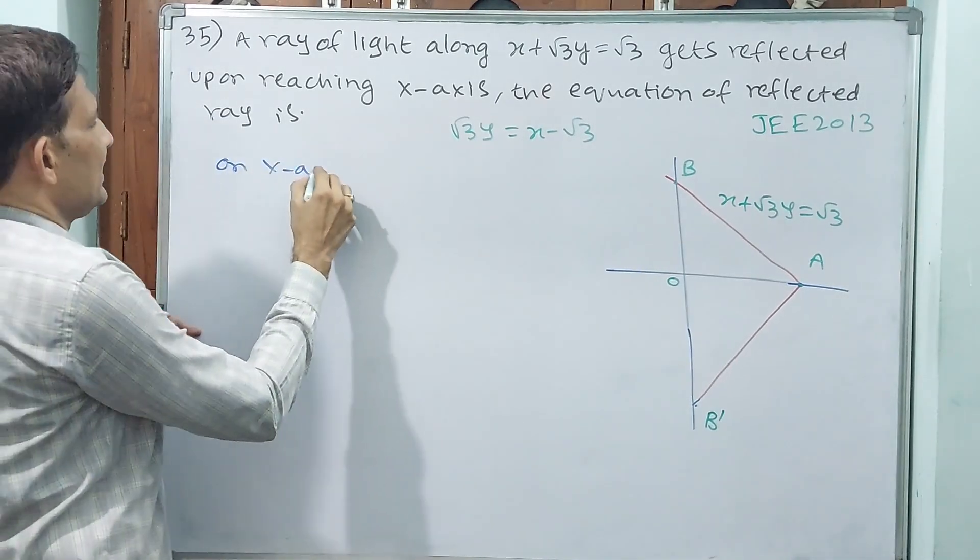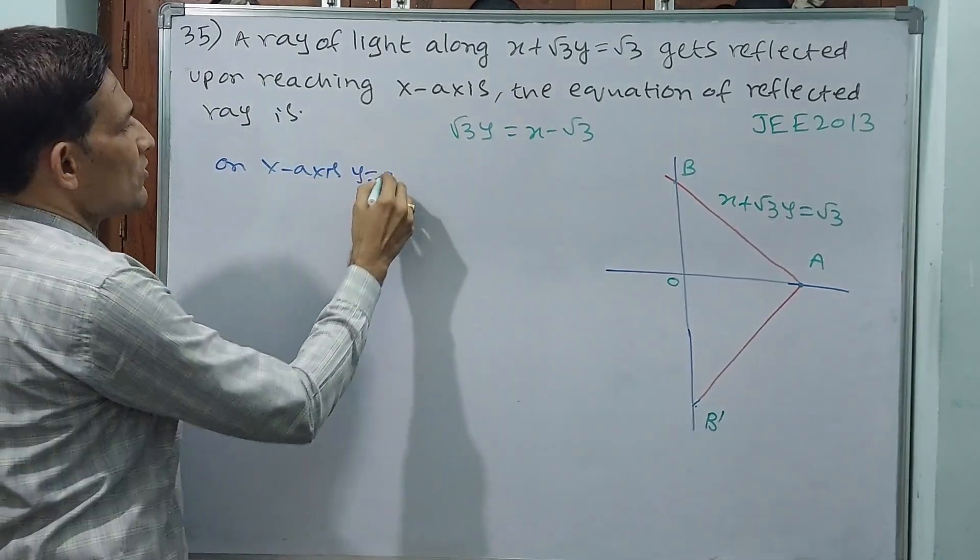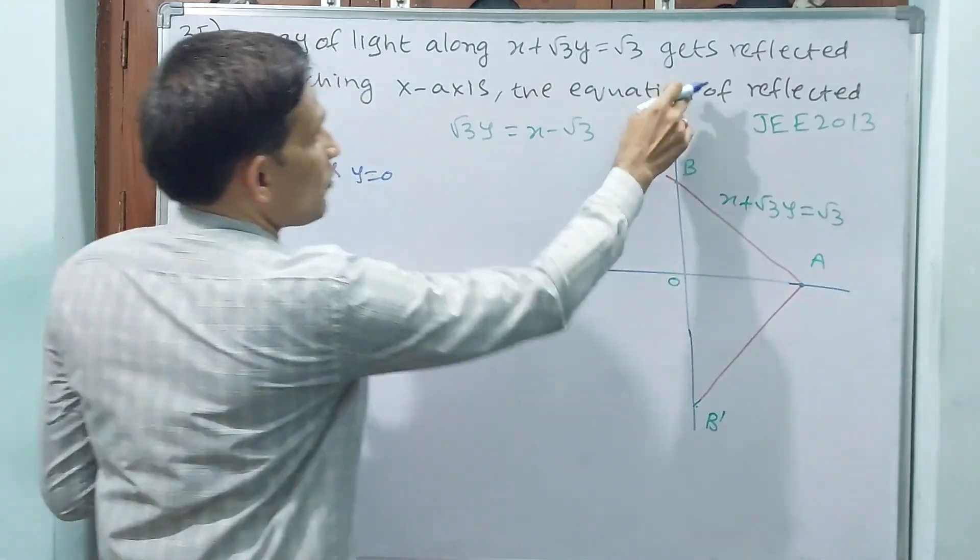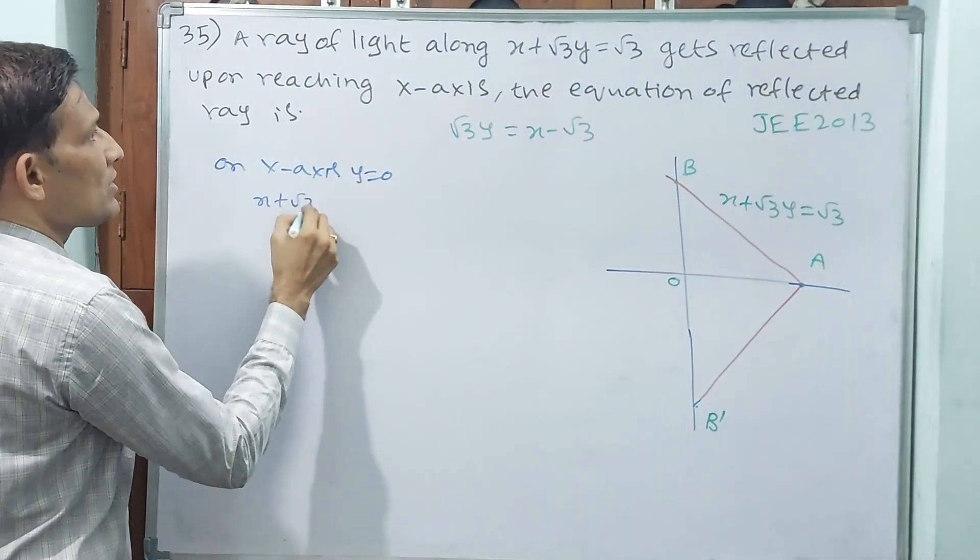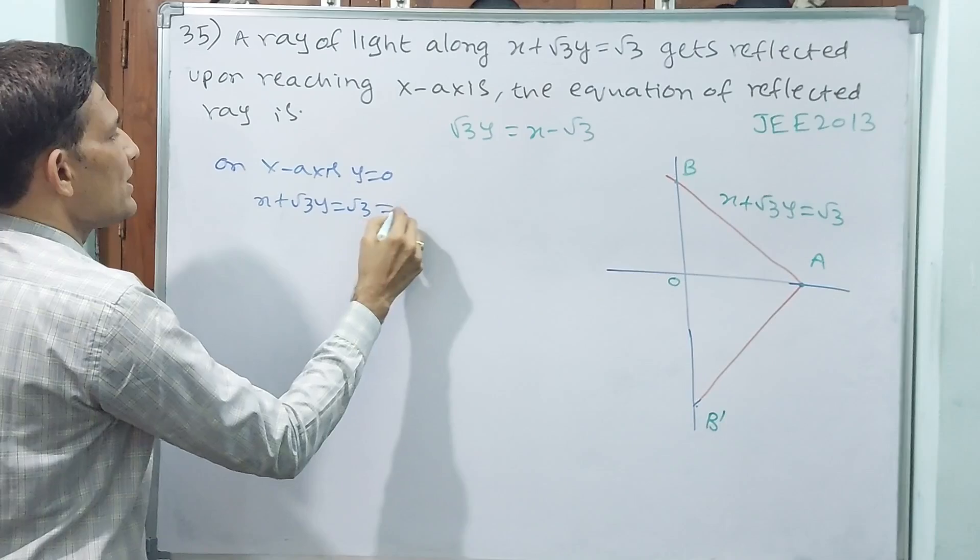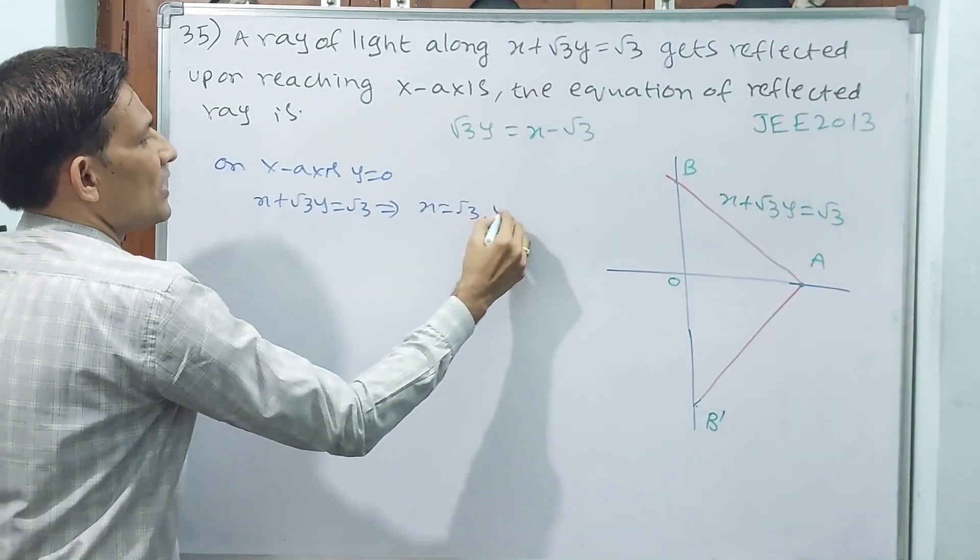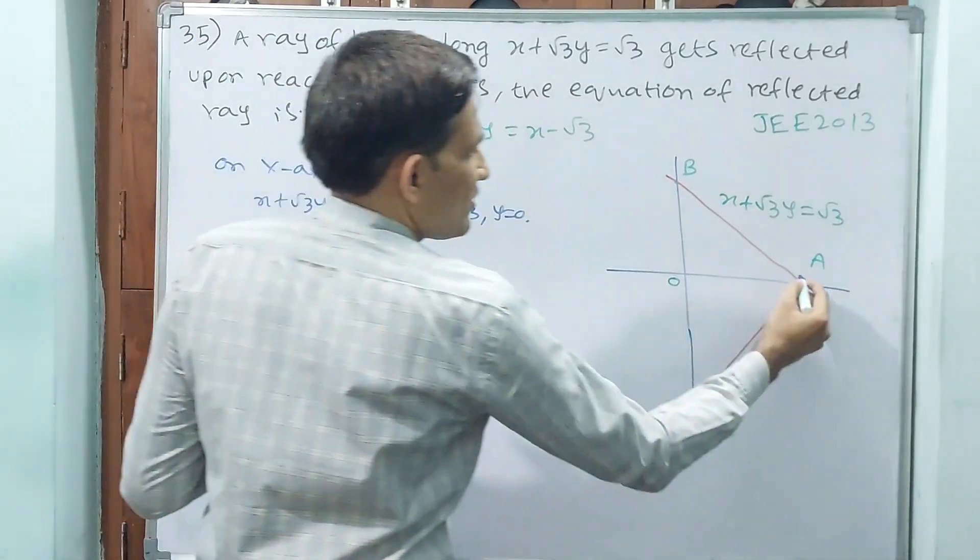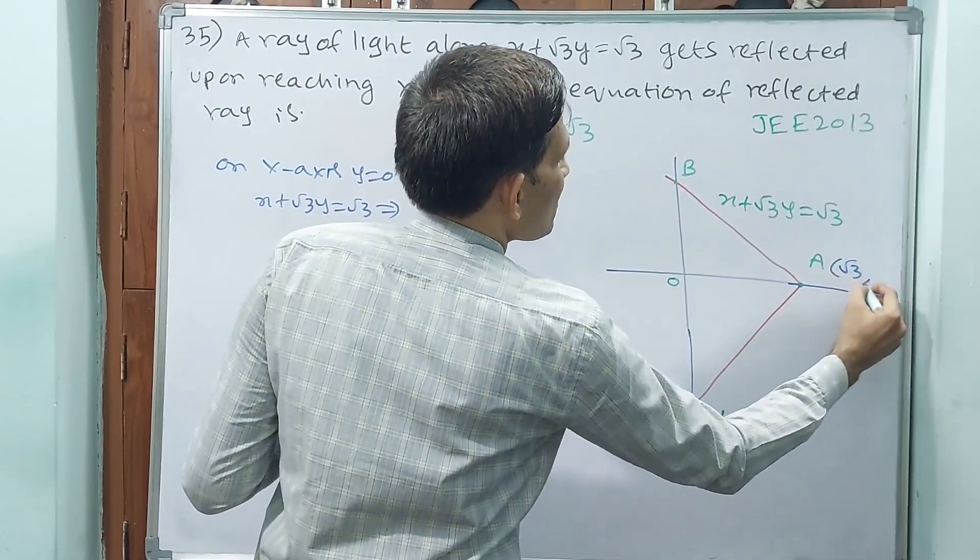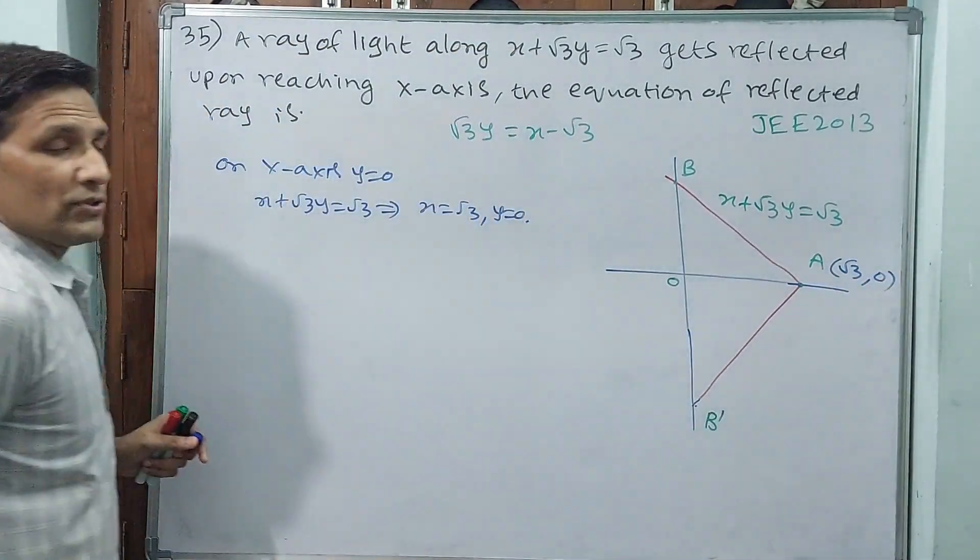On x-axis, y equals 0. So you put this up. That means x plus root 3y equals root 3 implies y equal to 0 means x equals root 3, y equals 0. That means your point A will be root 3 comma 0.